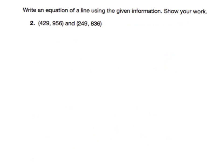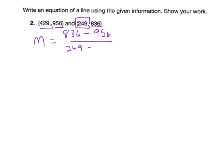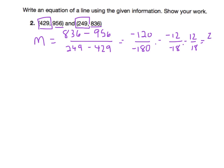Let's go ahead and do problem number 2. Remember, our first step is to calculate our slope. I'm going to take my y2 minus my y1 over my x2 minus my x1. When I subtract, 836 minus 956 gives me negative 120. 2.49 minus 4.29 will give me negative 180. When I simplify, I'm going to get negative 12 over negative 18. A negative divided by a negative equals a positive. And 12 and 18 are both divisible by 6, so my slope is 2 thirds.